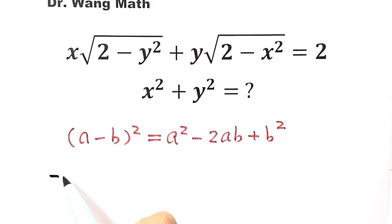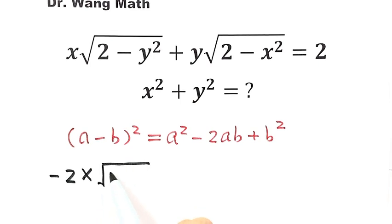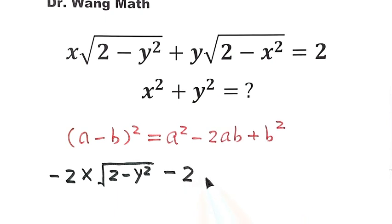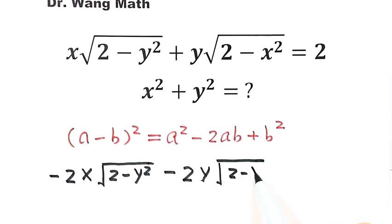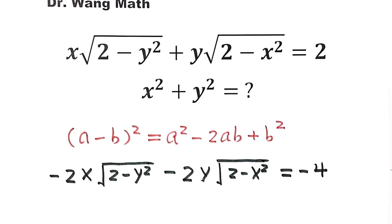So we get negative 2 times the first term, that's negative 2x times square root of (2 minus y squared), then minus 2y times square root of (2 minus x squared), and the right-hand side times negative 2 gives negative 4. We label this as equation 1.